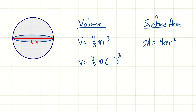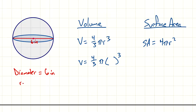Let's check if you plugged in the right number. The radius was not given — the diameter was given. So this is why this problem is a little different. If diameter equals six inches, that means radius equals three inches. Half of that segment is three. So we're going to plug in three into our formula, not six.